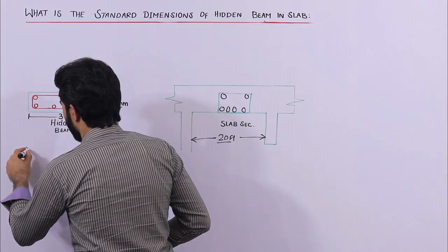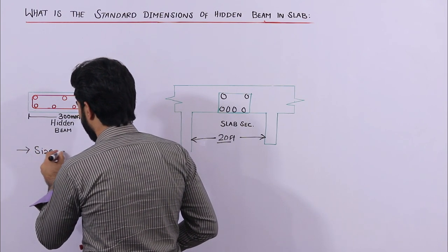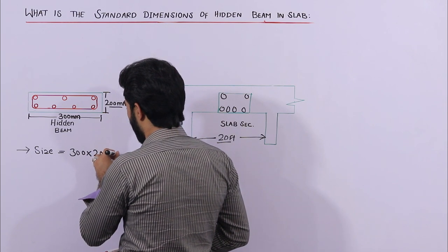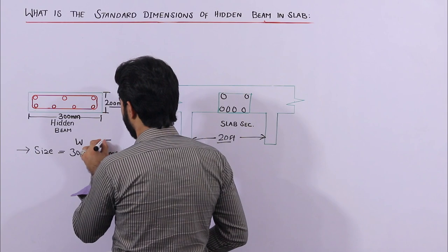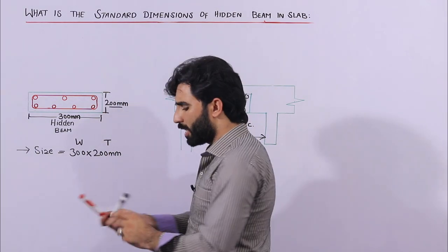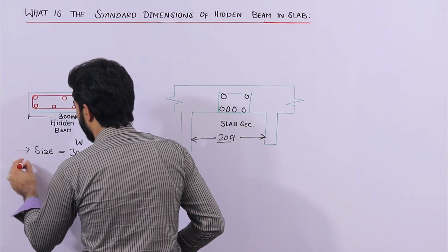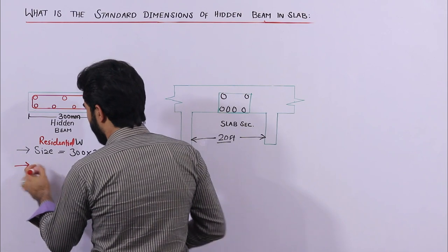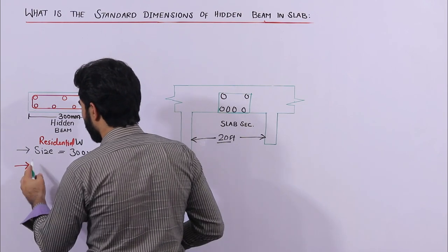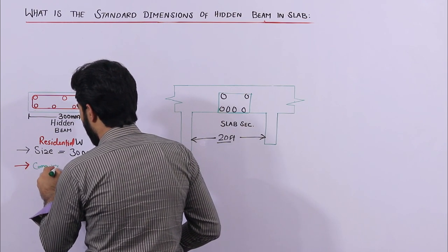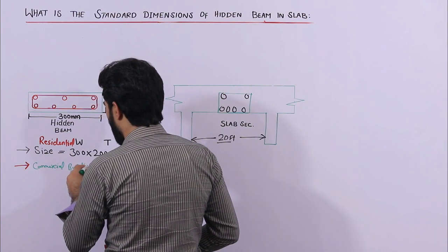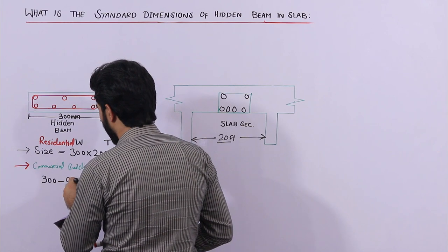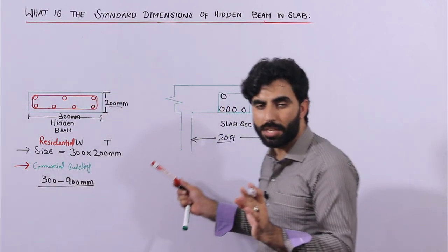Now let me guide you on the steel reinforcement. The size of the hidden beam is 300 mm width by 200 mm thickness. This is for a residential building. For a commercial building, the width can range from 300 mm to 900 mm — it depends on the structural load, the column span, and the length of the slab.